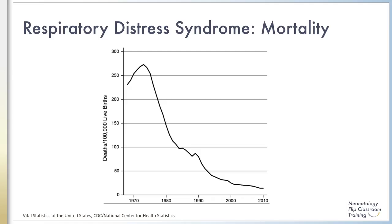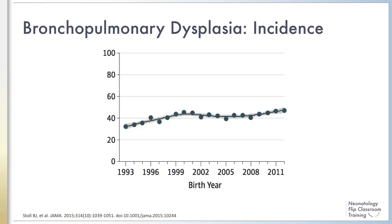The following two slides contain graphs that illustrate the challenge we face in respiratory care. In this graph, you can see that neonatal mortality associated with respiratory distress syndrome has decreased dramatically since the 1970s. Advances in neonatal care have allowed smaller and younger infants to survive. However, as shown in the next graph, the incidence of BPD in infants born at 22 to 28 weeks gestational age climbed up to over 40% by the late 2000s.